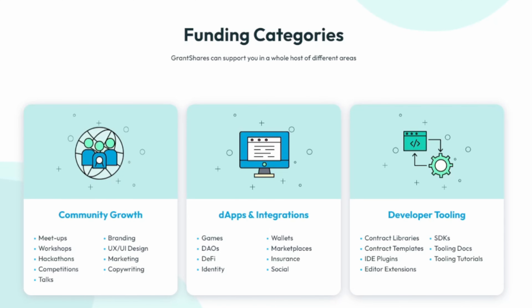Now, when you're picking your funding category, there are basically three sets of categories you can ask funding for. It's important to note that it's not just technical things. It can be a meetup, or starting up a YouTube channel where you could use funding to grow the Neo ecosystem, such as this one.